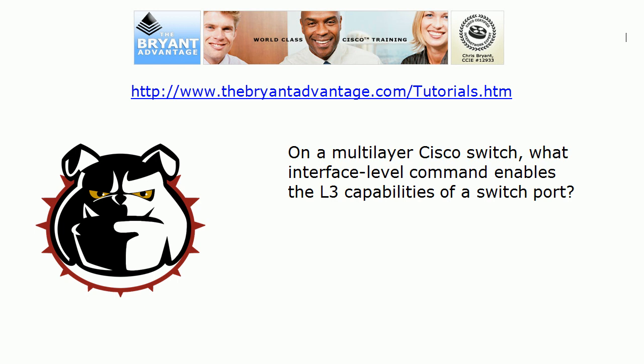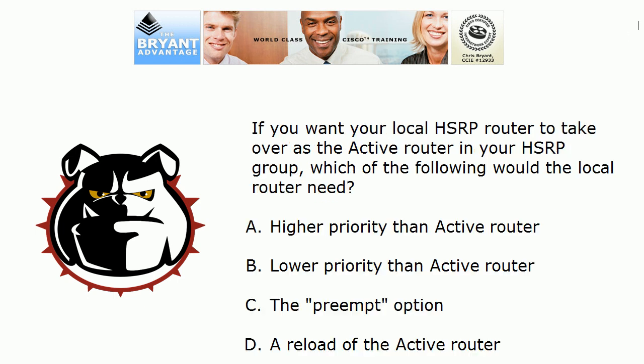We've got to know these protocols inside and out. First, a question not directly about HSRP but needed to get our config started: on a multi-layer Cisco switch, what interface-level command enables the L3 capabilities of a switch port? I'll go through questions quickly so we have time for discussion at the end — pause if you need extra seconds. If you want your local HSRP router to take over as the active router, would it need a higher priority, a lower priority, the preempt option, and/or would we need to reload the current active router?